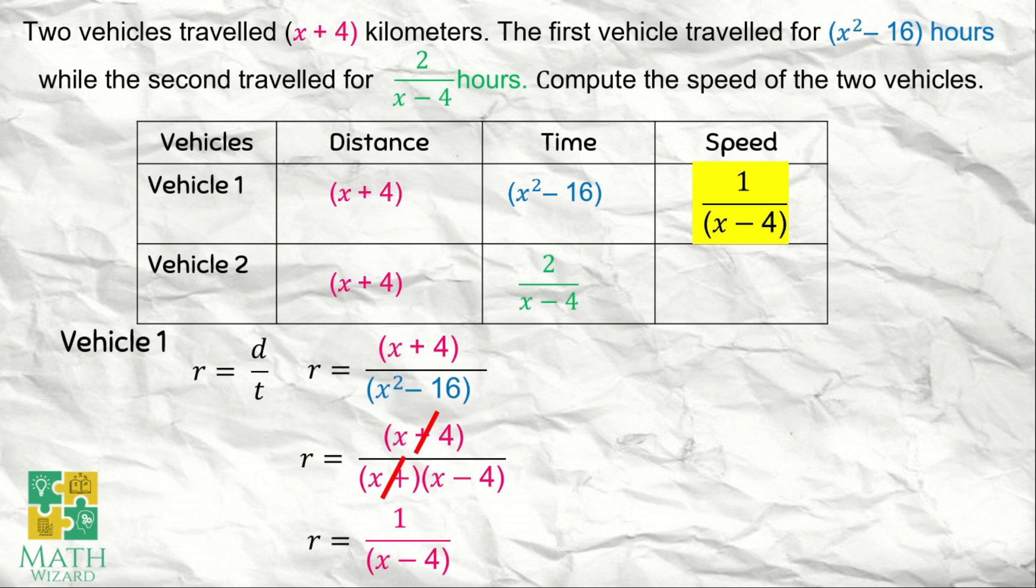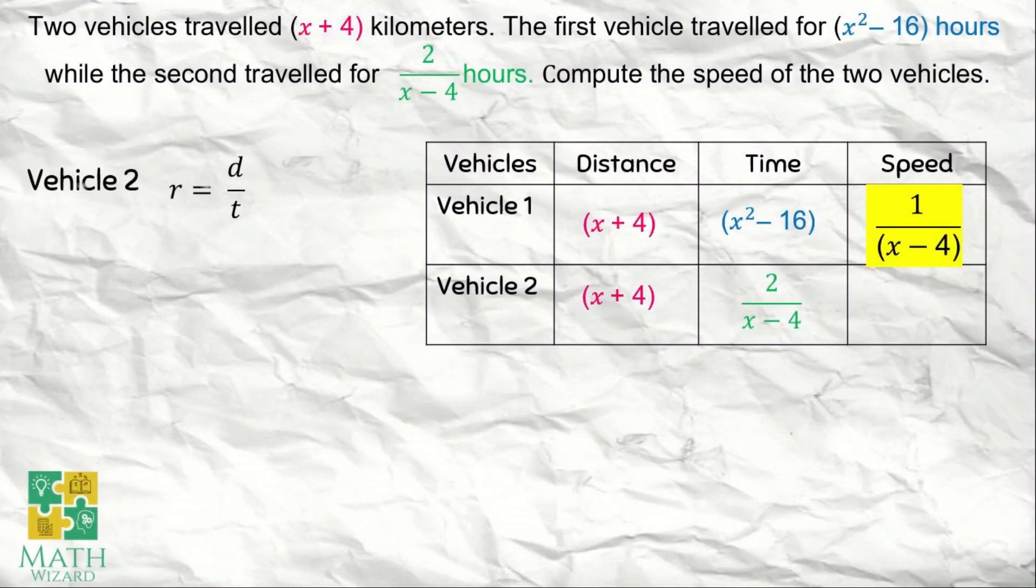Next, let's get the speed of vehicle 2 using the formula. Rate equals distance over time. By the process of substitution, the letter d will be replaced by the distance for vehicle 2, and the letter t will be replaced by the time of vehicle 2. This becomes rate equals x plus 4 over 2 over x minus 4.